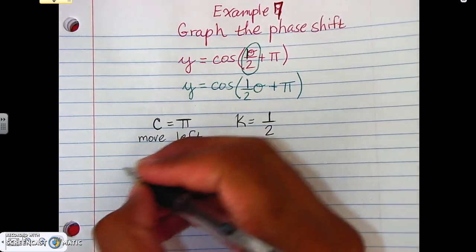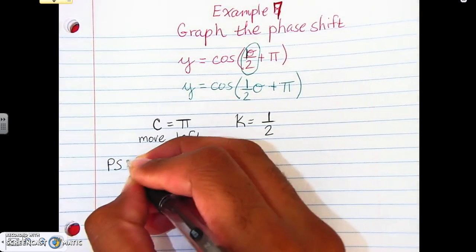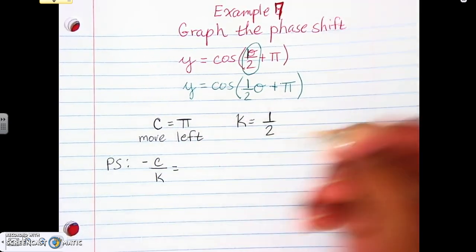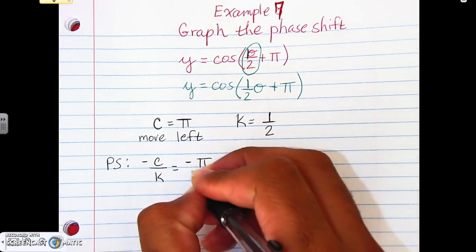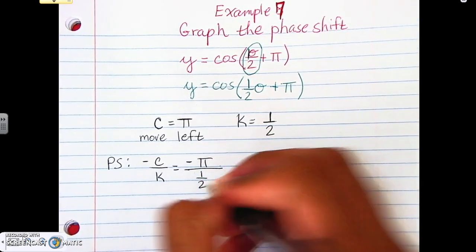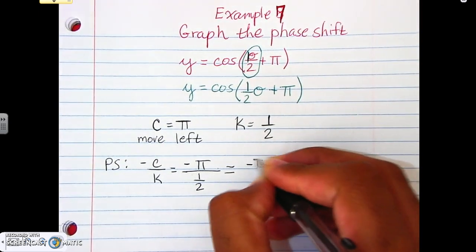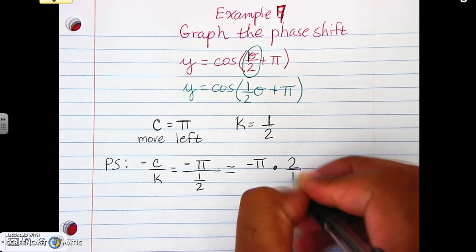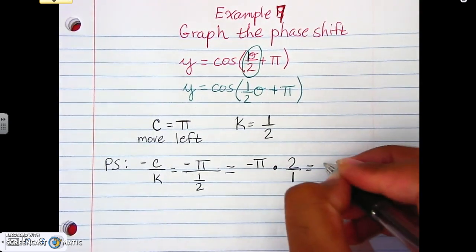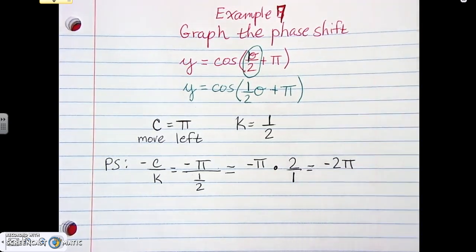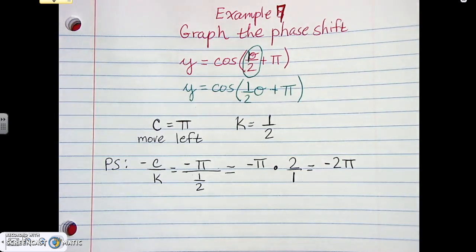The phase shift formula is negative C over K. So that's negative pi divided by one-half. Using keep-change-flip, that becomes negative pi times two over one, giving us negative two pi. So our phase shift is negative two pi.